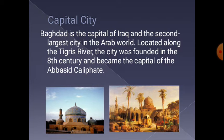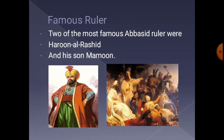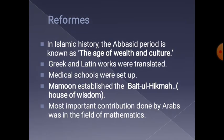Two of the famous rulers of the Abbasid dynasty were Harun al-Rashid and his son Mamun al-Rashid.